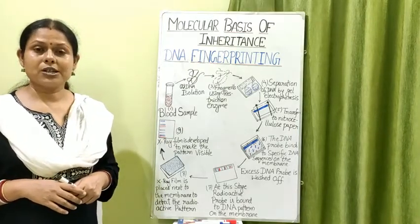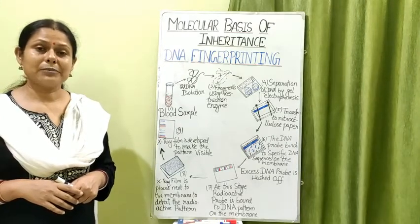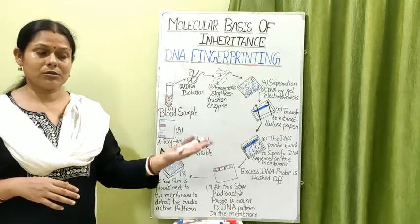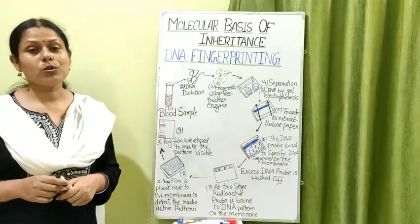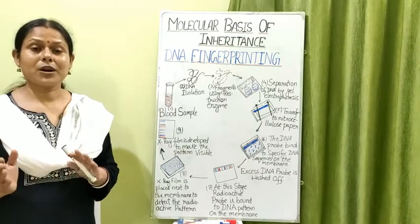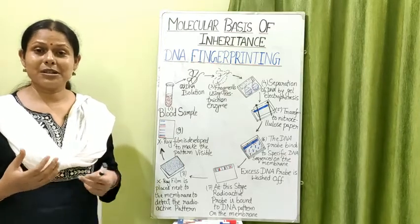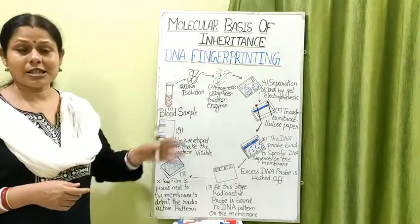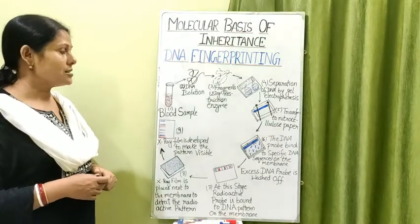DNA fingerprinting is also used to identify the parents of a child — to confirm whether a person is the child's father or mother. This is possible because the father's banding pattern will match 50% with the child's and the mother's will also match 50% with the child's. It is a sure-shot technique for establishing the identity of an individual.